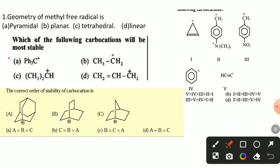But compared to a tertiary carbocation, this carbocation is less stable. So option A is the correct answer. In the first question, the answer is planar geometry, and in the second question, triphenyl methyl carbocation is the most stable one.